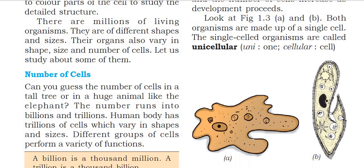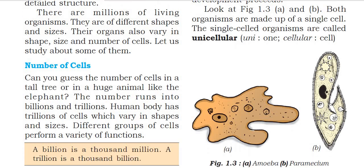Now look at figure 1.3. Amoeba and paramecium both have a single cell. These two organisms also have only a single cell. Both organisms are made up of a single cell — the single-celled organisms are called unicellular organisms. 'Uni' means one, 'cellular' means cell. Amoeba and paramecium are examples of unicellular organisms.